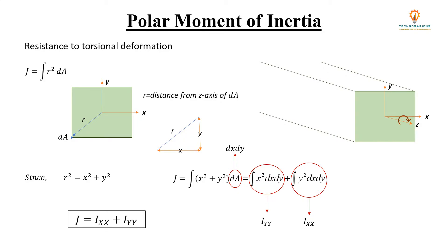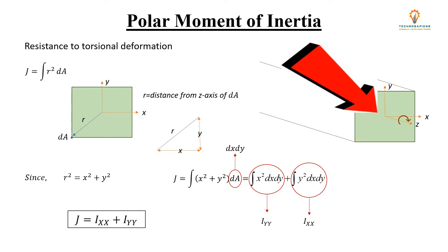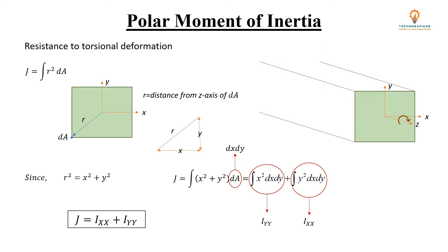So your polar moment of inertia is your resistance to torsional deformation. Now suppose this is the same beam shown in the form of a book — this was your x direction, this was your y, and this was your z direction. Bending moment about x gives the second moment of area about x axis, bending moment about y gives the second moment of area about y axis, and bending about z axis gives the polar moment of inertia.